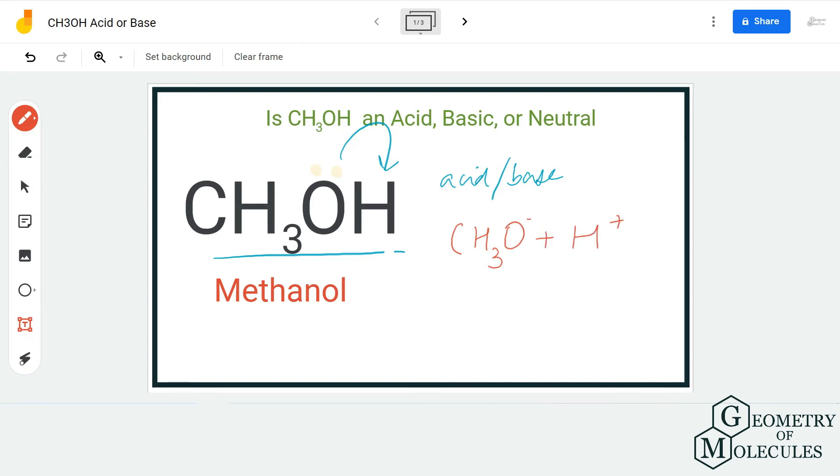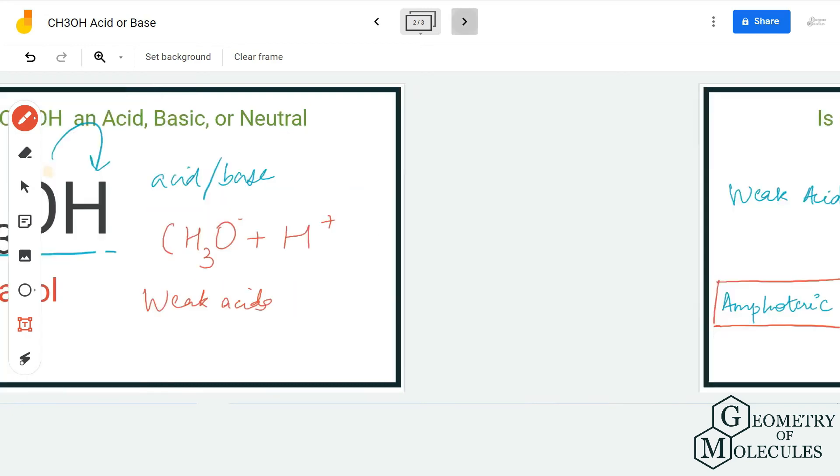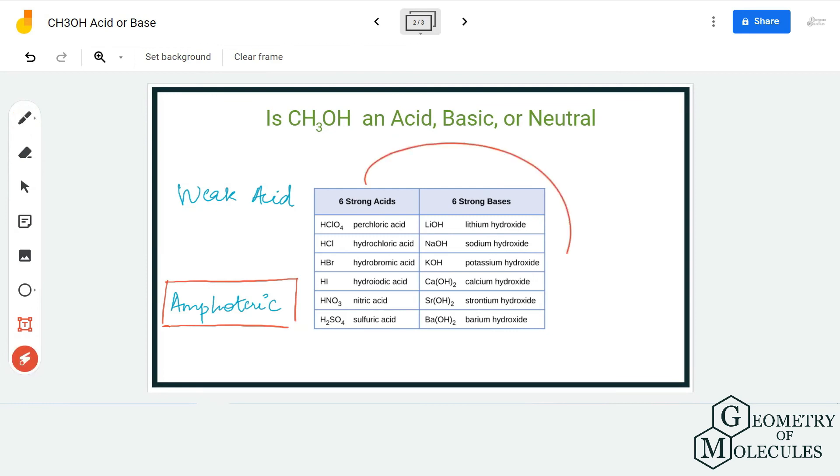If you look at this table of strong acids and strong bases, you will not find CH3OH because it exhibits the properties of a weak acid. So it has properties of both Lewis